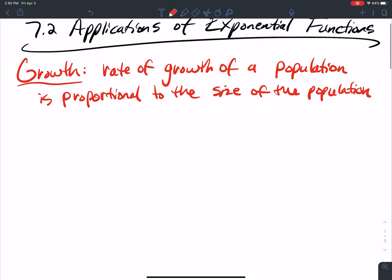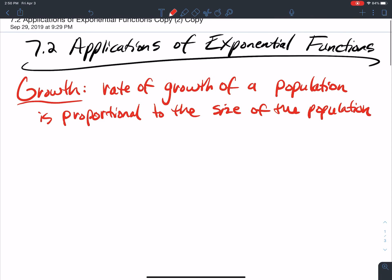This is exponential growth, right? So we're growing at a rate that is proportional to the size of the population. That is exponential growth.